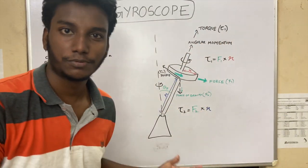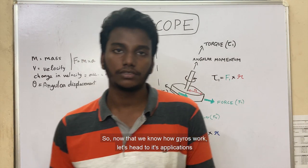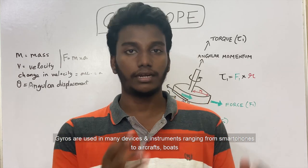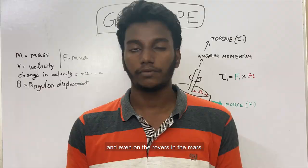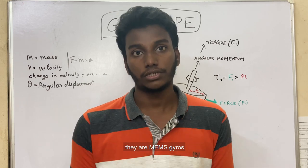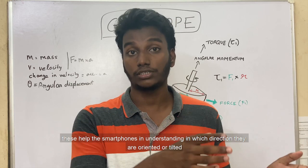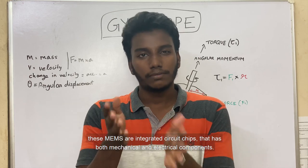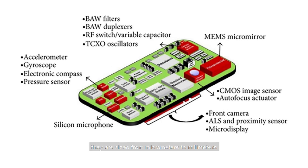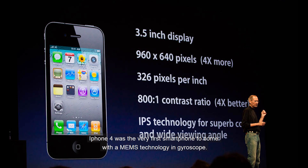I hope you guys understand that — I know it was pretty complicated. If you don't, make sure to leave your doubts in the comment section. Now that you know how a gyroscope works, let's look at where it's actually applied. Gyros are used in many instruments and devices ranging from smartphones to aircraft, boats, and even on the roads. In smartphones, they use MEMS gyros — micro-electromechanical systems — which help the smartphone understand the direction in which it is oriented or tilted. These MEMS are integrated circuit chips with both mechanical and electrical components sized from micrometers to millimeters.